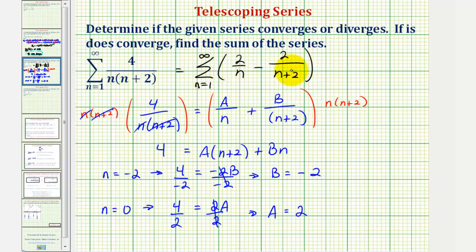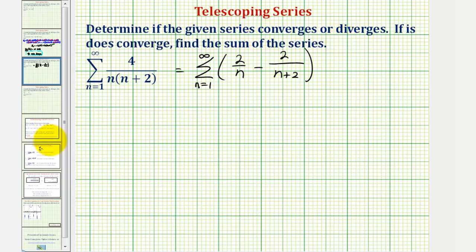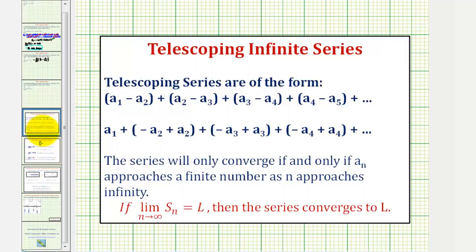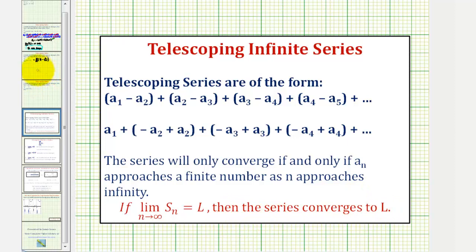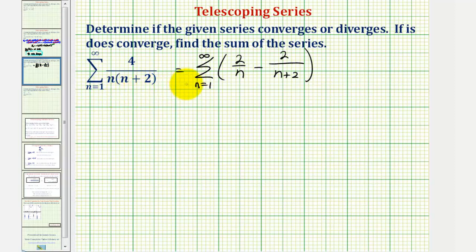So we use this form of a sub n to help us determine if this series converges or diverges. And because we have a telescoping series, we'll expand the terms in the series. Notice when we do this, many of the terms will simplify out because they're opposites. So our goal will be to find a formula for the partial sum. Once we find a simplified formula for the partial sum, we'll determine the limit as n approaches infinity. If this limit equals L, a finite value, then the series converges to L.